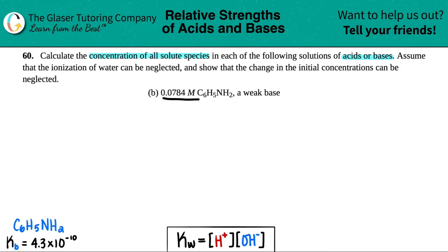We have 0.0784 molarity of C6H5NH2, and they're telling me that that's a weak base. So thank you very much. I went to the back of the textbook, and I found the Kb value that we need to answer this question, and that's 4.3 times 10 to the negative 10th. Now with any Kb value or Ka, we always have to work off of a balanced equation. So that's the first thing we're going to do.